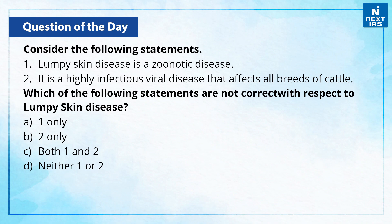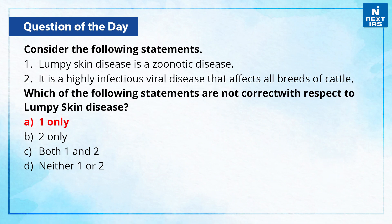Consider the following statements: First, lumpy skin disease is a zoonotic disease; and second, it is a highly infectious viral disease that affects all breeds of cattle. Which of the following statements are not correct with respect to lumpy skin disease? The correct answer is statement 1 only. Lumpy skin disease is not a zoonotic disease — it does not spread from animals to humans. The first statement is wrong but the second statement is correct, so the correct answer is option A only.